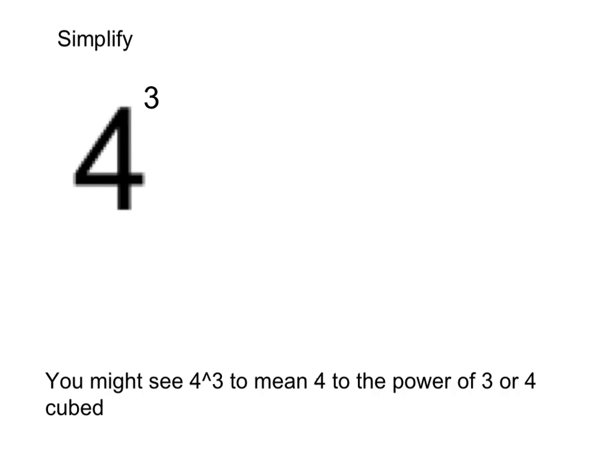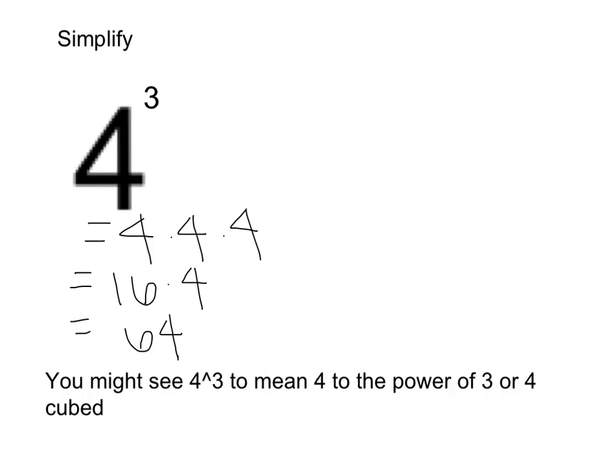Here we have 4 to the third power, or 4 cubed. If we're using the third power, we'll often just say cubed. So we have 4 to the third power, which means 4 times itself 3 times: 4 times 4 times 4. Using our order of operations, multiply left to right: 4 times 4 is 16, times 4, and 16 times 4 is 64. So 4 cubed, or 4 to the third power, is 64.